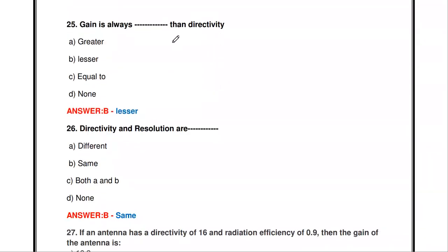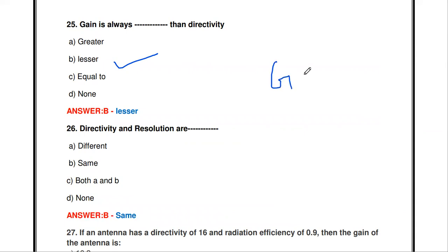The gain is always less than the directivity. The formula is G = η × D, where η is the radiation efficiency (a value less than or equal to 1). Since efficiency η ≤ 1, the gain G is always less than or equal to the directivity D.